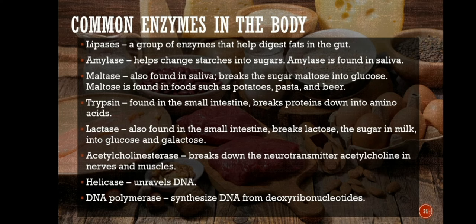Common enzymes in the body include lipases, a group of enzymes that help digest fats in the gut, while amylase helps change starches into sugars — amylase is found in saliva. Maltase, also found in saliva, breaks the sugar maltose into glucose. Maltose is found in foods such as potatoes, pasta, and beer.